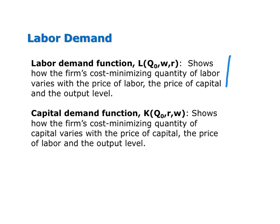The labor demand curve looks at the relationship between just two variables: the cost minimizing amount of labor and the price of labor, holding the rental rate and output levels constant. On the other hand, the labor demand function is a mathematical equation that tells us the relationship between the cost minimizing level of labor and the wage rate, rental rate, and output level.